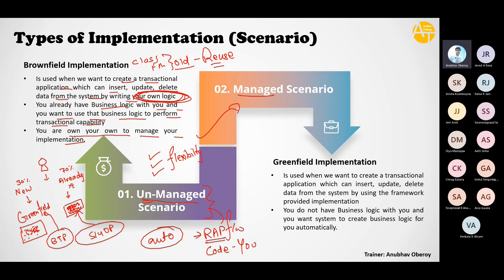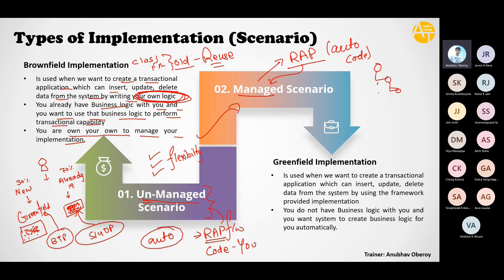The managed scenario is the full potential of RAP. Here RAP is telling you: you sit and relax and enjoy, I will take care of it. RAP is going to auto-generate most of the code for you. You just have to build your business object, your tree data structure, and you surrender it to RAP. You tell RAP: here is my business object — and the RAP framework is going to generate most of the code for you out of the box. That is the full potential of the RAP framework, and it is used for greenfield implementation.